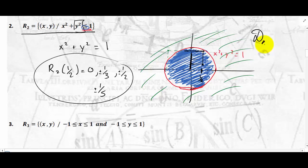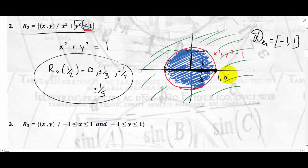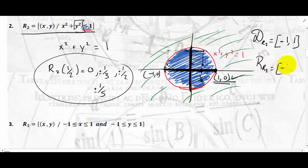What is the domain of R2? Well, everything between negative 1 and 1. For every x between negative 1 and 1, I can find a corresponding y that is in my relation. For example, (1, 0) is in the relation because 1 squared plus 0 squared equals 1. And (negative 1, 0) is also in it. What is the range? Likewise, it's everything between negative 1 and 1.